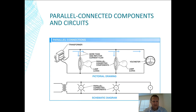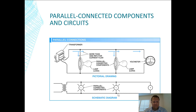Most of the time, things are wired in parallel. We have power coming in, and it doesn't matter whether one light bulb burns out because electricity can still get to the next one. From a schematic standpoint, here's the transformer, power coming through the lamp — this is how things are usually wired: parallel.